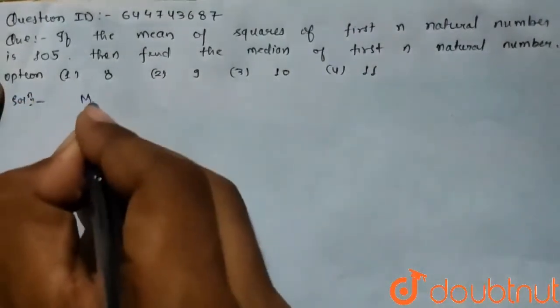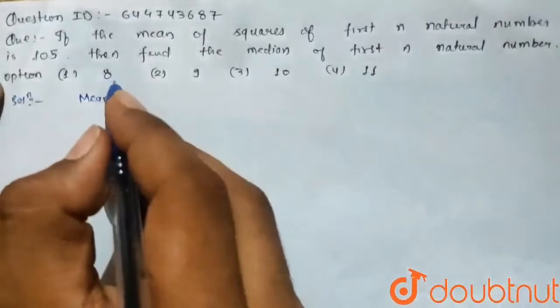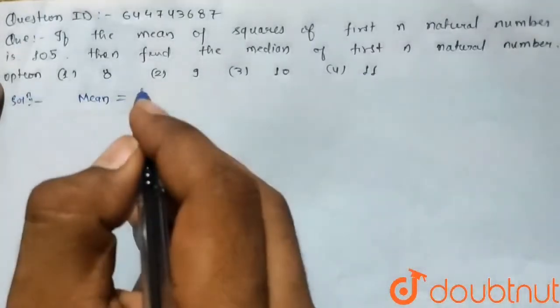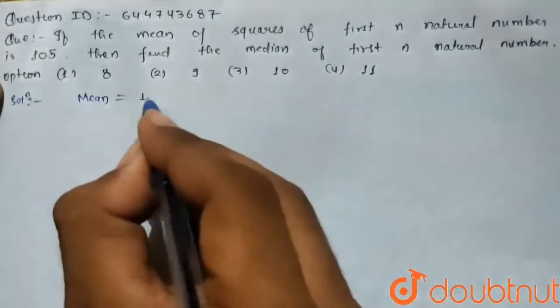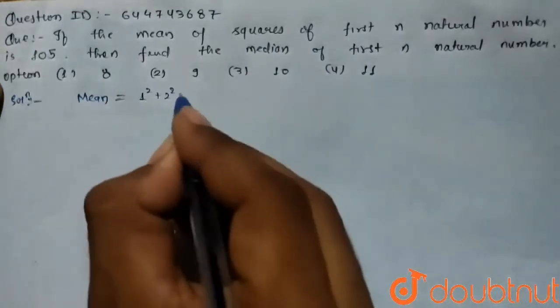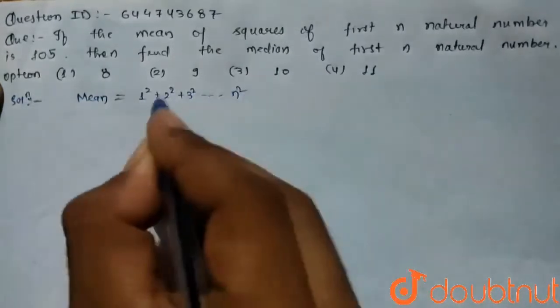Mean equals the summation of 1² + 2² + 3² up to n², divided by n.